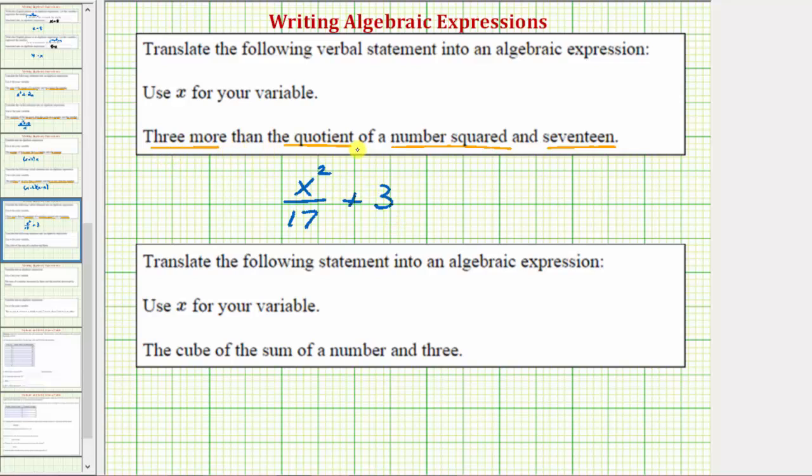Three more than the quotient of a number squared and 17. Now let's look at our second example.